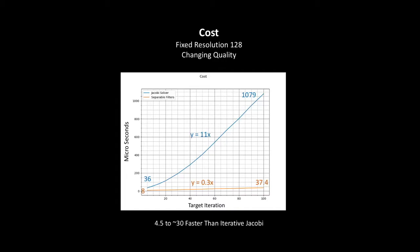As for the cost, the separable filters scale much better with higher iterations than the Jacobi solver. For example, for 100 iterations, Jacobi solver takes more than 1000 microseconds, while our filters take about 35 microseconds.